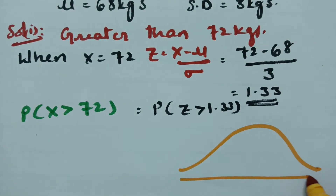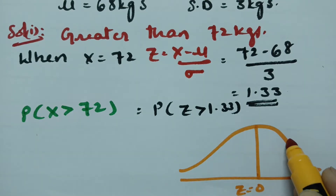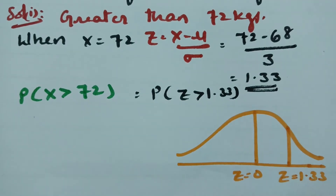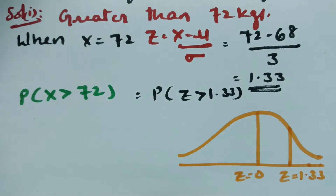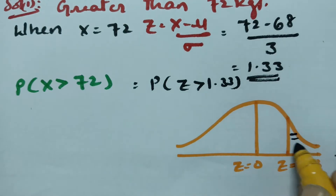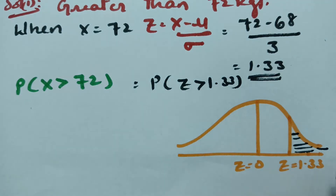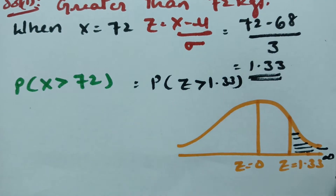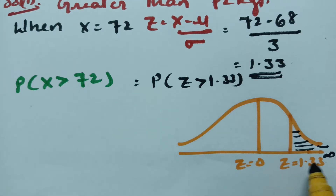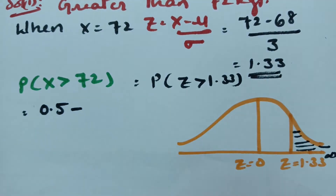Looking at the normal curve figure, z equals 0 at center and 1.33 is to the right side of the ordinate. Since z is greater than 1.33, we need the area to the right. Instead of calculating from 1.33 to plus infinity, it is enough to calculate 0.5 minus the area between z equals 0 to z equals 1.33.